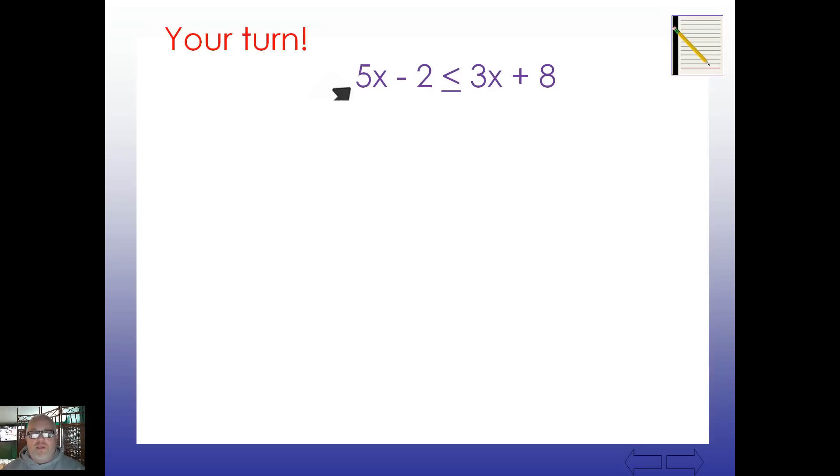All right, then. How about this? Did you start by getting all the variables on one side? Let's get rid of the smaller version. It looks like we're going to subtract 3x. We end up here with 2x minus 2 is less than or equal to 8. Let's add 2 to both sides.